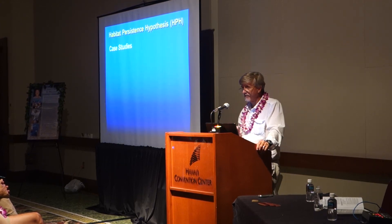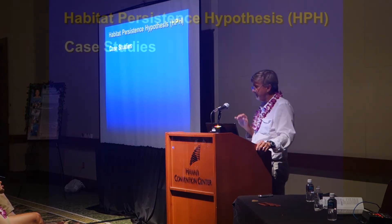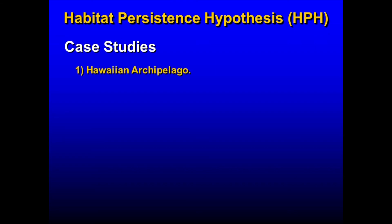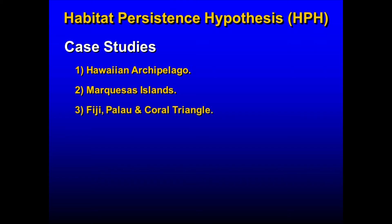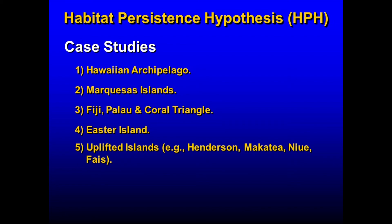In our paper, we outlined specific case studies that could help tease apart these predictions with further study. One is the Hawaiian archipelago, which is an interesting anomaly in the Pacific — being insular and out in the Pacific Basin but having much more sloped bathymetry than typical atolls. The Marquesas Islands are similar, with more robust complex bathymetry than many other Pacific islands. Palau, Fiji, and the Coral Triangle — careful examination of both shallow and deep species in these regions should help tease apart this hypothesis. Easter Island has tremendous potential. We're also very interested in uplifted islands, and there are interesting implications for seamounts at various depths.